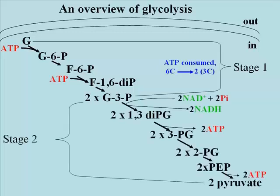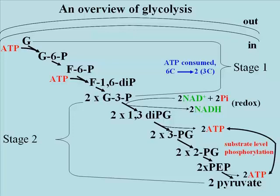In stage 2 of glycolysis, each of the reactions happens twice per starting glucose molecule and yields in the end two molecules of pyruvate. The first reaction of stage 2 is an oxidation or redox reaction involving the oxidation of glyceraldehyde 3-phosphate, or G3P. In two subsequent reactions, ATP will be made by substrate level phosphorylation. Because these reactions occur twice, a total of 4 ATP molecules will be made by the time pyruvate is produced.